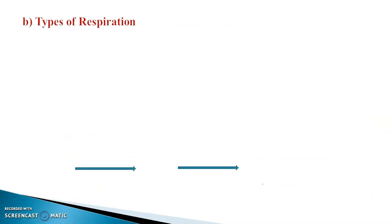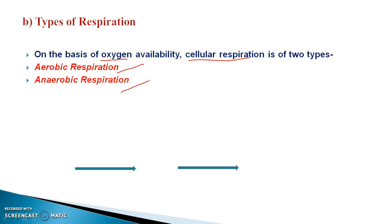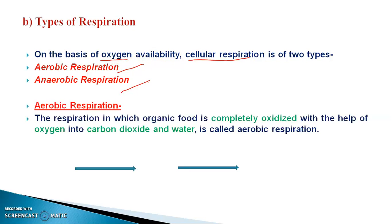Now I am going to explain the different types of respiration. There are two types of respiration: aerobic respiration and anaerobic respiration. These two types are totally based on the availability of oxygen. On the basis of oxygen availability, there are two types of cellular respiration — aerobic and anaerobic. Let us start with aerobic respiration.